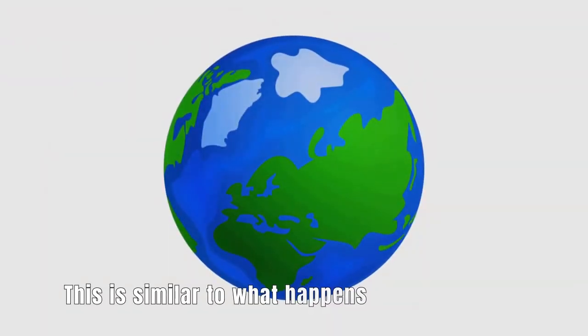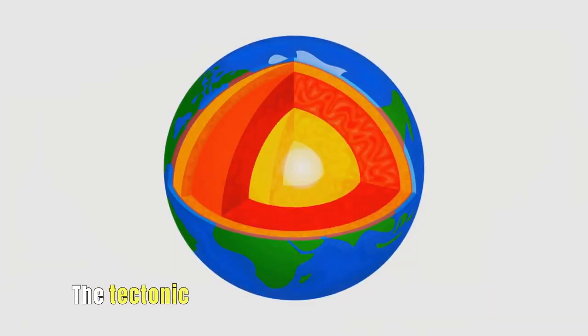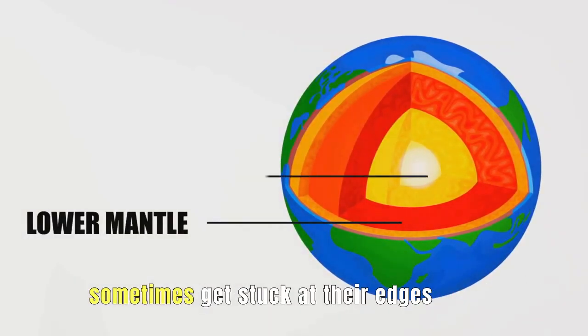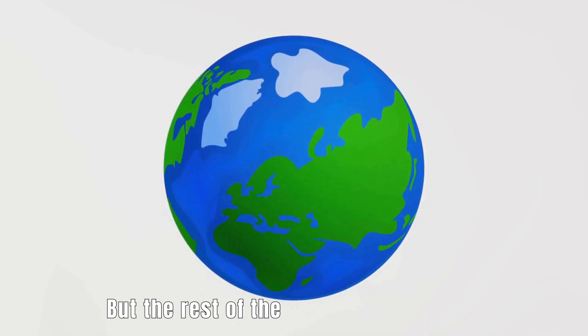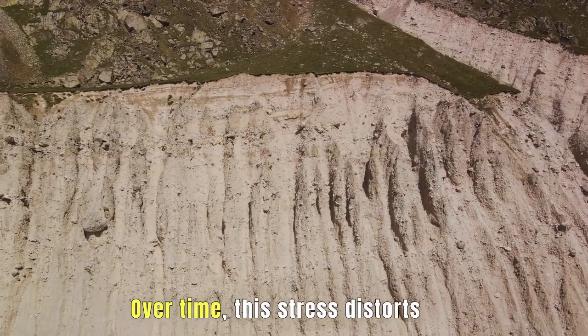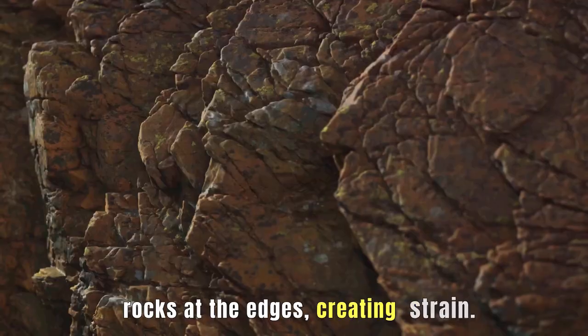This is similar to what happens with our Earth's crust. The tectonic plates with all their slow-motion wandering sometimes get stuck at their edges due to friction. But the rest of the plate keeps moving, building up stress at the stuck points. Over time, this stress distorts the rocks at the edges, creating strain.